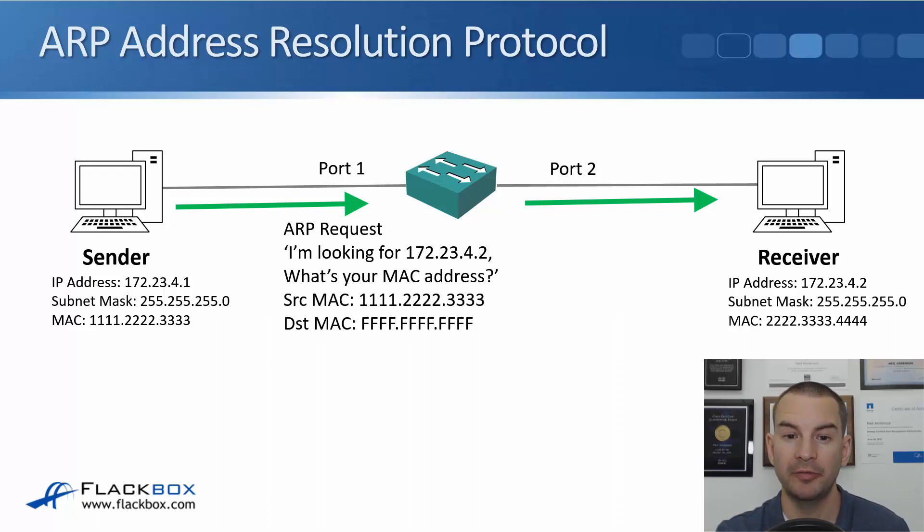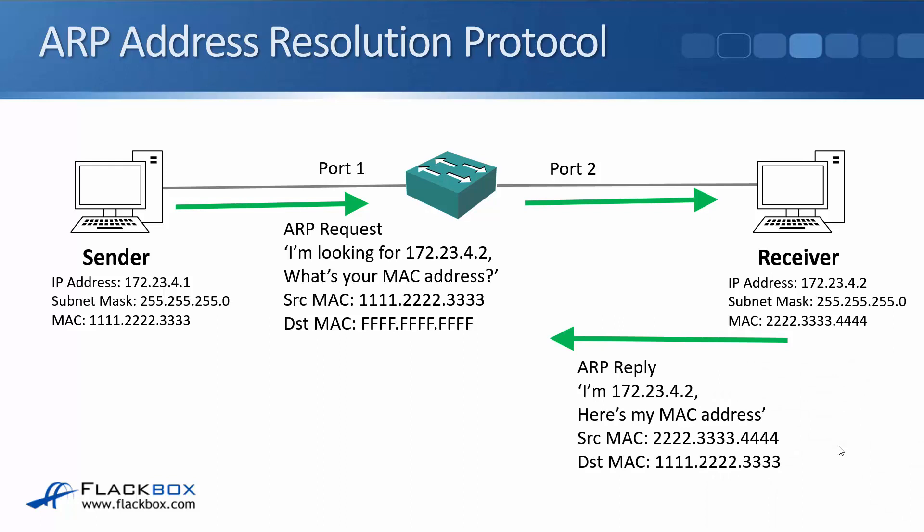The receiver sees that the ARP request is looking for 172.23.4.2, and that is its own IP address, so it will respond. It sends an ARP reply back saying: I'm 172.23.4.2, and here's my MAC address. That comes from its source MAC of 2.3.4, and the destination MAC address is the original sender's unicast MAC address of 1.2.3. The receiver knows exactly where to send it back because that original MAC address was in the ARP request. The switch then sends that ARP reply out of port 1 down to the original sender, because it is unicast traffic for a known MAC address already in its MAC address table.